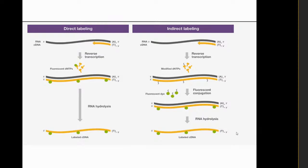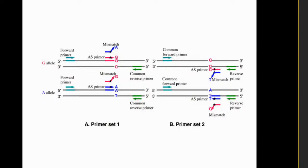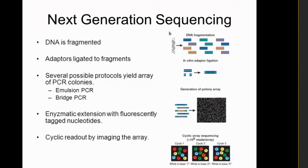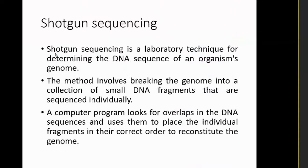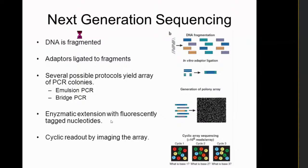The next generation sequencing (NGS) is an application of the PCR method with applications in medical and many other fields. The steps are: DNA fragmentation and adapter ligation, then PCR, then enzymatic fluorescence detection, then microarray. In NGS (shotgun sequencing), we select the larger sequence, cut it into small pieces, identify the small pieces, and find overlapping regions to assemble the complete sequence.